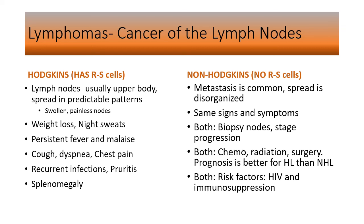The presence of HIV and immunosuppression increases the risk of developing lymphoma. Children with HIV, other forms of immunosuppression, or those taking medications for juvenile rheumatoid arthritis, or receiving treatment for leukemia, may develop lymphoma.